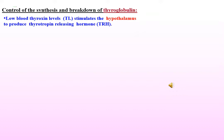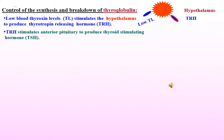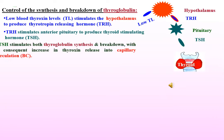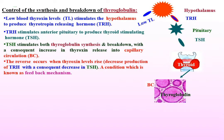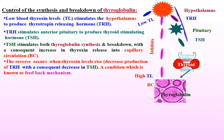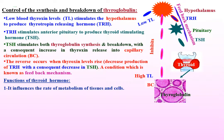The level of calcium in the blood regulates the secretion of thyrocalcitonin, which is not under the control of the pituitary gland. Low blood thyroxine levels stimulate the hypothalamus to produce thyrotropin-releasing hormone (TRH). TRH stimulates the anterior pituitary to produce thyroid-stimulating hormone, which in turn stimulates both thyroglobulin synthesis and breakdown, with a consequent increase in thyroxine release into capillary circulation. The reverse occurs when thyroxine levels rise — decreased TRH and consequently decreased TSH — known as the feedback mechanism.